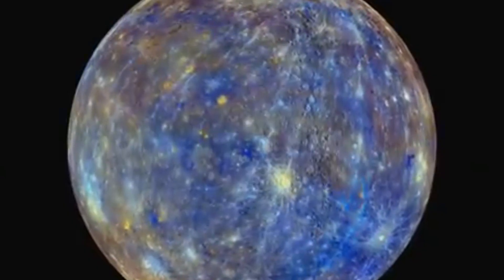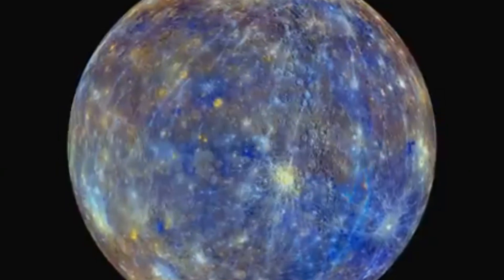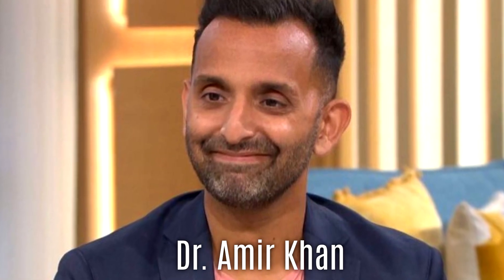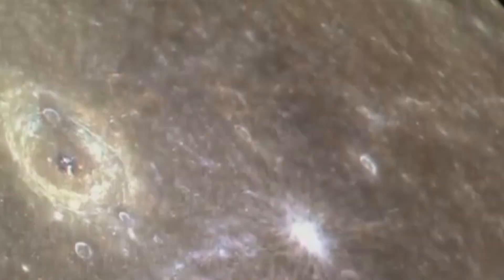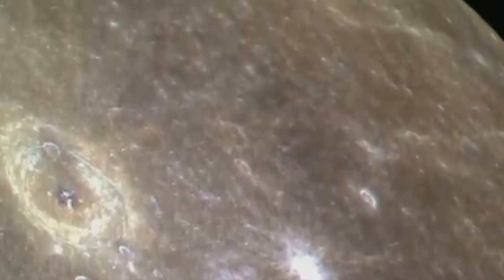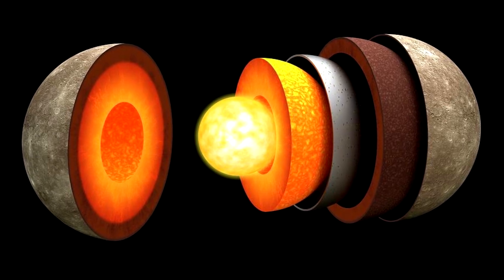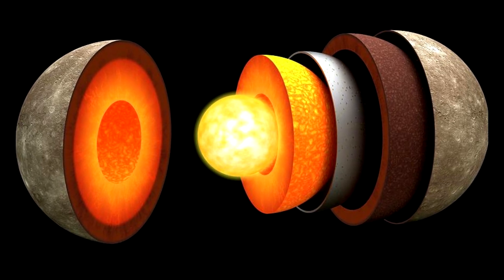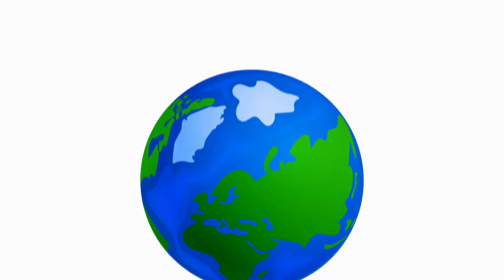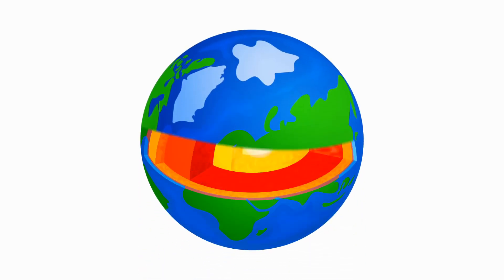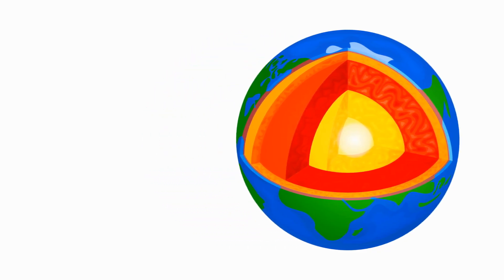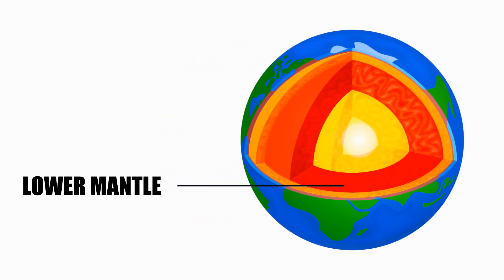Recent studies have also revealed intriguing insights into Mercury's composition. Utilizing data from the Messenger mission, Dr. Amir Khan from the University of Zurich examined the planet's internal structure and concluded that Mercury's core likely consists of a liquid outer layer surrounding a solid inner core, similar to Earth's structure. However, Mercury's inner core is significantly larger than Earth's, which could account for some of the planet's unusual magnetic characteristics.